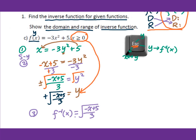The last step is to change y into the inverse function symbol: f⁻¹(x) equals square root of (negative x plus 5) over 3. We need to find the domain and range of the inverse function. We are already given the domain of the original function, so the range of the inverse function is y greater than or equal to 0.